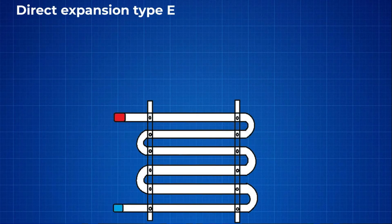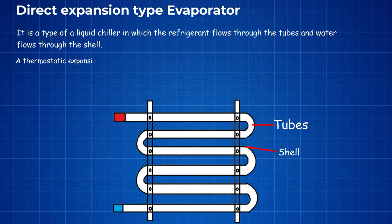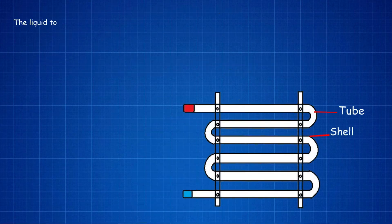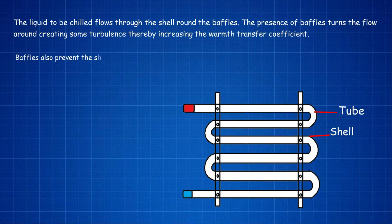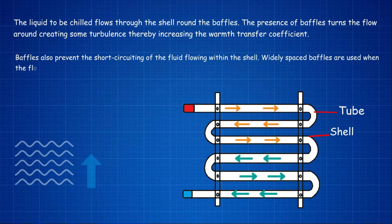The direct expansion type evaporator is a type of liquid chiller in which the refrigerant flows through the tubes and water flows through the shell. A thermostatic expansion valve feeds the refrigerant into the tubes, which flows in several passes through dividers within the covers of the shell on either side. The liquid to be chilled flows through the shell around baffles, which create turbulence, thereby increasing the heat transfer coefficient. Baffles also prevent short circuiting; widely spaced baffles are used when flow or liquid viscosity is high.